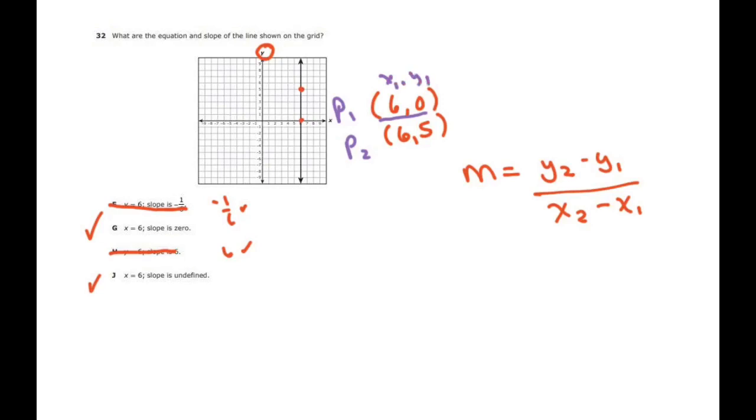This one is x2, y2. Alright, so when you plug it in, you're going to get 5 minus 0 over 6 minus 6. So you're going to get 5 divided by 0.